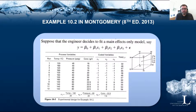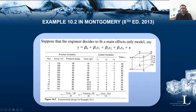Let's move on to an example from the course book which shows orthogonality and also shows how the model parameters — the beta values — are estimated using the X and Y matrices. In this example we have three process variables: temperature, pressure, and concentration, and we have yield as the response. We want to know how these three process variables affect yield. The engineer is interested in fitting a first-order model only, looking at main effects X1, X2, X3 with no interaction effects.